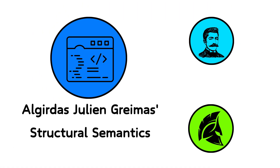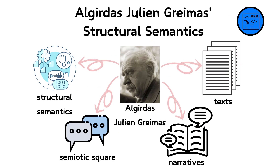Algirdas Julien Greimas's Structural Semantics. Algirdas Julien Greimas, a French-Lithuanian semiotician, developed a method of structural semantics known for its focus on binary oppositions and its detailed grammar of narrative. His approach, often encapsulated in what is known as the semiotic square, provides a tool for deeper analysis of texts by examining the complex relationships and structures within narratives.